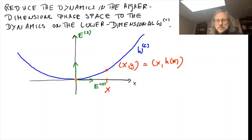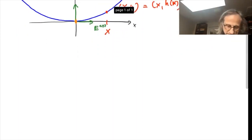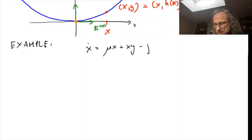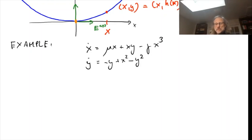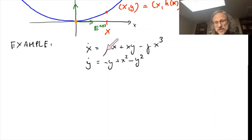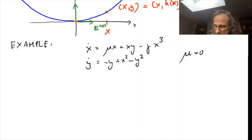Let's do that in a simple example. Consider the system: x-dot equals μx + xy − γx³, and y-dot equals −y + x² − y². If we linearize around the origin, the nonlinear terms can be ignored. We have a stable direction in the y-direction, and if μ equals zero, we have a zero eigenvalue so the center eigenspace is the x-direction. To have a center manifold, we take μ equals zero, meaning we're at the bifurcation point.